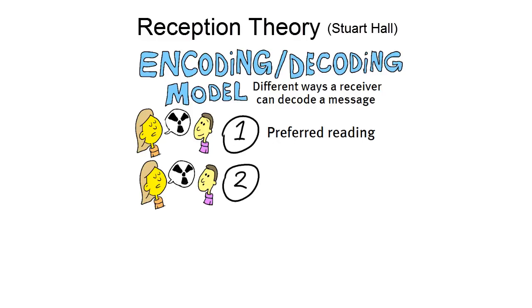Of course, Jake could also partly decode it in the preferred way, and also read it partly different. Stuart Hall called this a negotiated reading. For instance, Jake could agree with Rose's arguments, but he decides to vote for someone else.